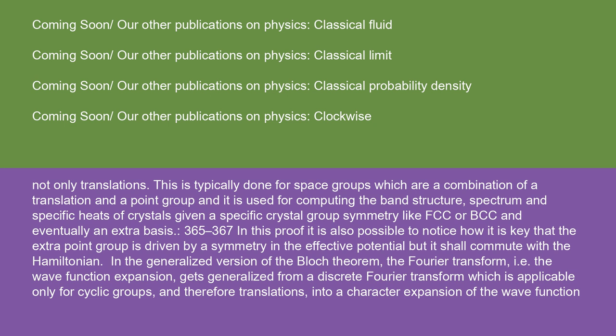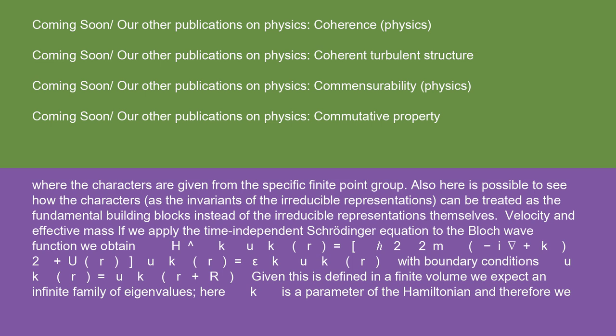In this proof, it is also possible to notice how it is key that the extra point group is driven by a symmetry in the effective potential, but it shall commute with the Hamiltonian. In the generalized version of the Bloch theorem, the Fourier transform, i.e. the wave function expansion, gets generalized from a discrete Fourier transform, which is applicable only for cyclic groups and therefore translations, into a character expansion of the wave function, where the characters are given from the specific finite point group. Also here is possible to see how the characters, as the invariants of the irreducible representations, can be treated as the fundamental building blocks instead of the irreducible representations themselves.